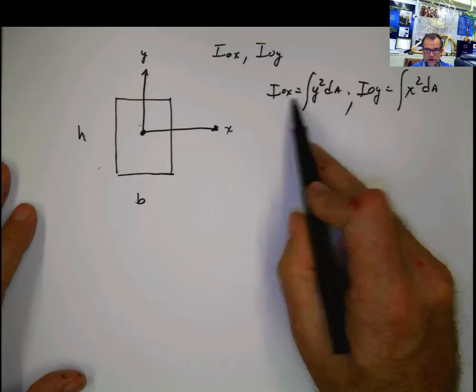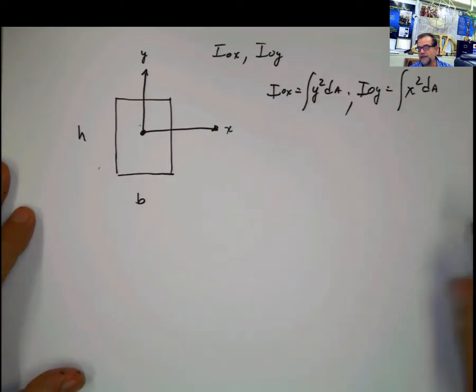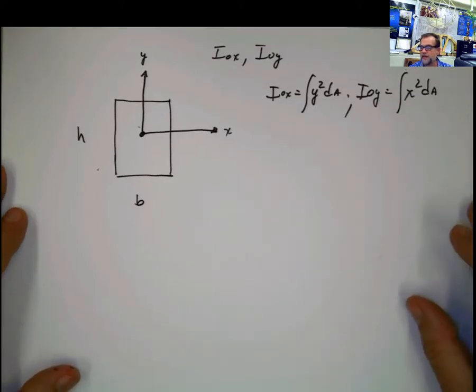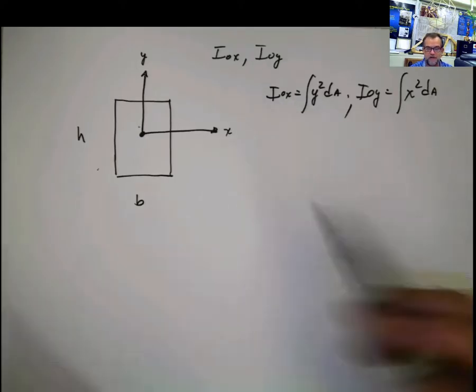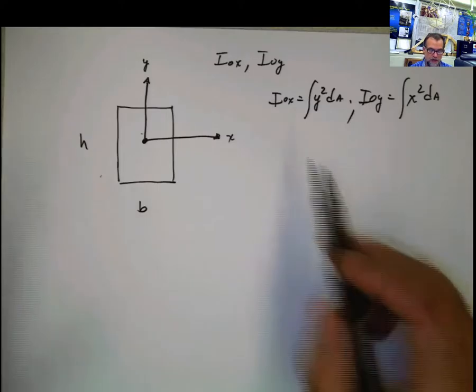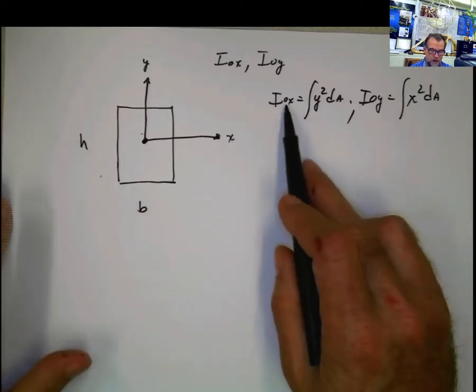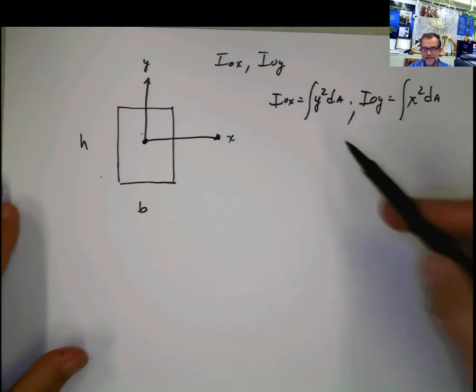Now, another thing that students get confused all the time, at least during my exams, is that they come from centroid and now they move to moment of inertia. And in centroid, when you calculate the centroid in x, it's the integral of x dA.